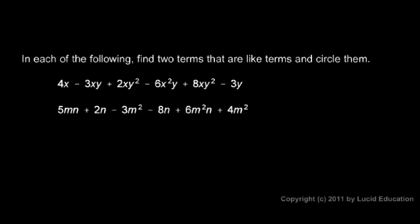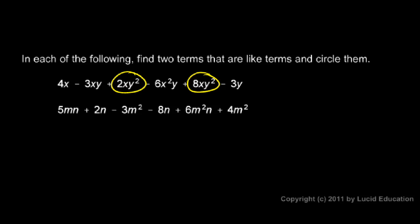Here's an example. In each of the following, find two terms that are like terms and circle them. Let's look at the first one. There's an X here, and I don't see any other terms that contain just an X. There are other terms that have an X in them, but the variable part has to be exactly the same. Here's an XY term, and none of these others have an XY. So let's look at the next one — XY squared. This one also has an XY squared. So both of these are XY squared terms. Those are like terms because they have exactly the same variable part. So let's circle those. There's no other X squared Y term, and there's no other Y term. So we found the like terms and circled them.